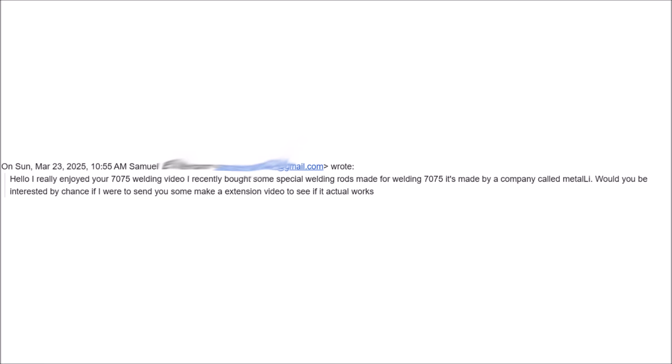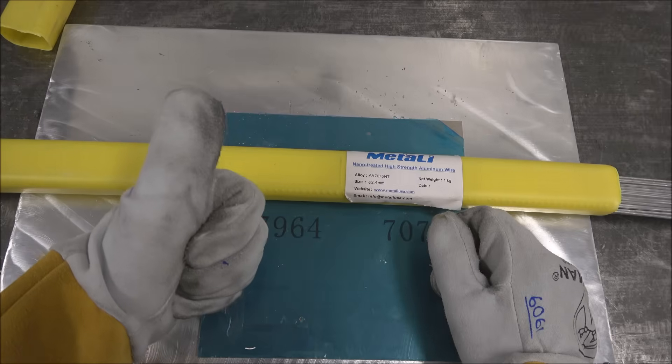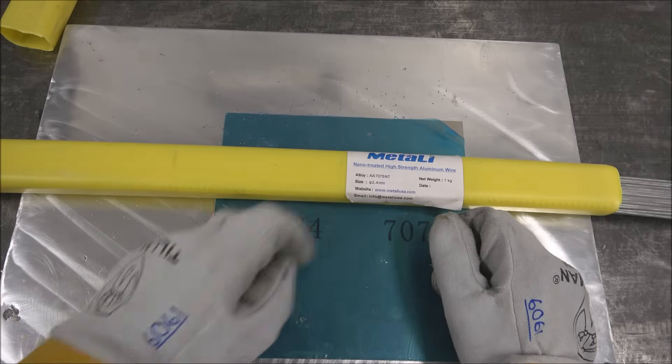Hello. I really enjoyed your 7075 welding video. I recently bought some special welding rods made for welding 7075. It's made by a company called Metal Li. Would you be interested by chance if I were to send you some to make an extension video to see if it actually works? I sure would. Thanks Samuel for sending it to me. Let's get right to it.